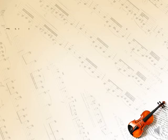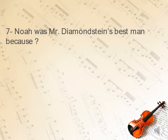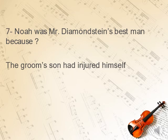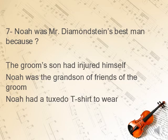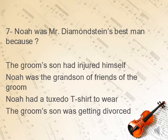Question 6: Noah was Mr. Diamondstone's best man. What happened in the story that made Noah the best man? Options include: the groom's son had injured himself, Noah was the grandson of friends of the groom, or Noah had a tuxedo t-shirt to wear. The answer is clear — the groom's son, whose name was Alan, had injured himself.